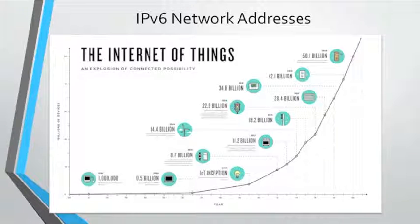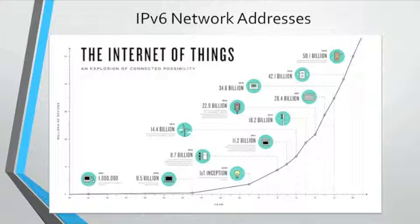Now let's define IPv6 network addresses. IPv6 is designed to be the successor to IPv4. IPv6 has a larger 128-bit address space, providing for 3.4 × 10^38 addresses. However, IPv6 is much more than just larger addresses. When the IETF began development of a successor to IPv4, it used this opportunity to fix the limitations of IPv4 and include enhancements. The depletion of the IPv4 address space has been the motivating factor for moving to IPv6. As Africa, Asia, and other areas of the world become more connected to the internet, there are not enough IPv4 addresses to accommodate this growth. With an increasing internet population, a limited IPv4 address space, issues with NAT, and the Internet of Things, the time has come to begin the transition to IPv6.